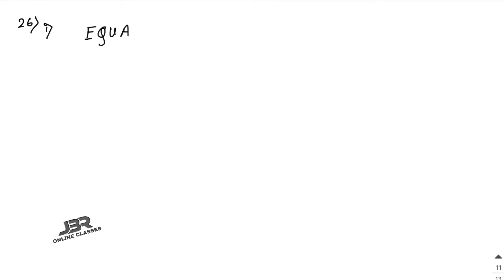For the previous one please check the description box, the link will be there. In sum number 26, the first question: how many words beginning and ending with a consonant can be formed using the letters of the word EQUATION? Total letters in EQUATION: 8. Vowels: E, U, A, I, O — that's 5. Consonants: total 3.